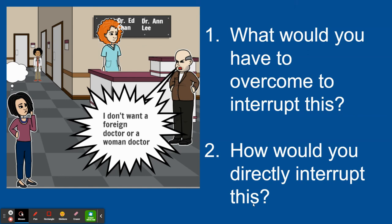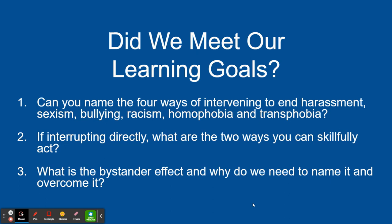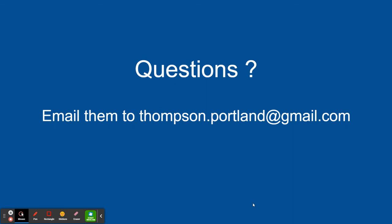I hope you've had time to think about that, and I'm interested to hear what you would come up with. To review our learning goals: can you name the four ways of intervening to end harassment, sexism, bullying, racism, homophobia, and transphobia? Secondly, if you were interrupting directly, what are the two ways that you can skillfully act? And lastly, what is the bystander effect, and why do we need to name it and overcome it? If you have questions or want to share how you would have interrupted that racism and sexism in the picture of the doctor's office, I'd love to hear from you. My email is thompson.portland@gmail.com. Thank you so much.